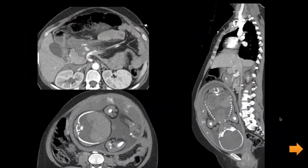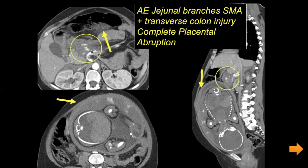Other injuries from branches of the abdominal aorta may also be diagnosed on CT examination. This is an unfortunate case of a pregnant woman who presented with active bleed within the mesenteric hematoma, a pericolonic injury with transverse colon injury, and complete placental abruption.